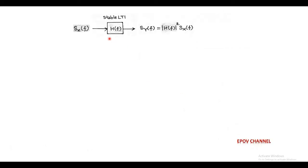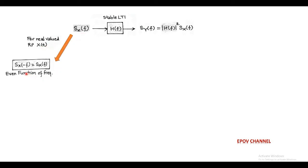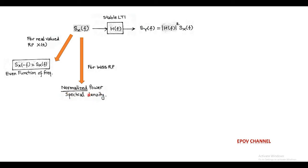Next, we gather more information about the power spectral density of input random process x(t). We again take a stable LTI system in the frequency domain. At the input, we represent the power spectral density S(f) corresponding to random process x(t). When we treat x(t) as a real-valued random process, the power spectral density has the property of even symmetry: S(f) = S(−f), which is analogous to r(τ) = r(−τ). For a wide sense stationary input random process, the normalized power spectral density is denoted P(f) and is the ratio of S(f) to ∫ S(f) df, representing the total area under the curve.